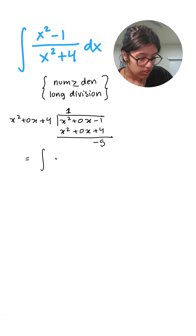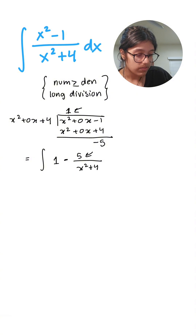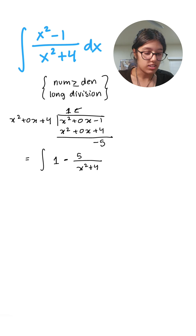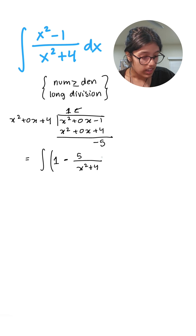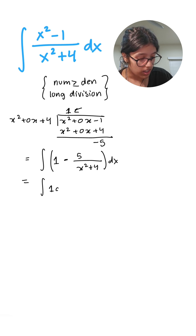Now we can rewrite our integral as the integral of 1 — which is the quotient — minus 5 over (x² + 4), where -5 is the remainder and x² + 4 is the divisor, all times dx. Now let's split apart the integral.